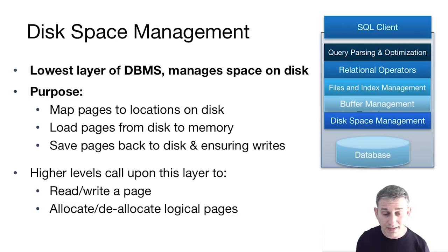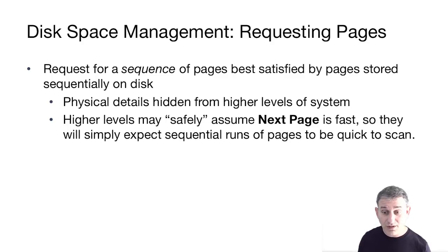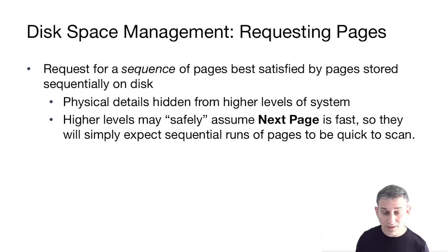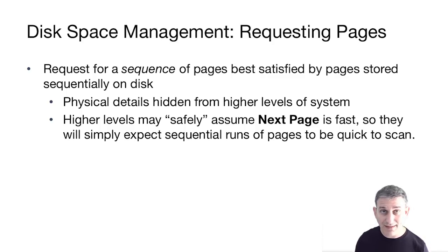The higher levels — namely the buffer manager — call on the disk space manager to read and write pages and to allocate and deallocate logical pages. The disk space manager gets requests for pages, often sequences of pages, and its job is to ensure that a sequence of pages is satisfied by pages stored physically sequentially on disk. The physical details of storage are hidden from higher layers, which safely assume that the 'next page' concept is fast. The disk space manager manages that performance expectation by laying out pages on disk intelligently.